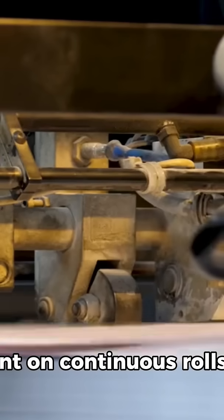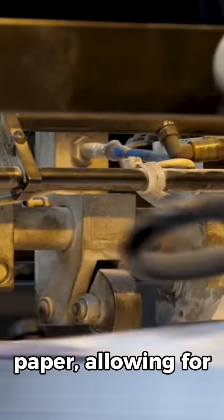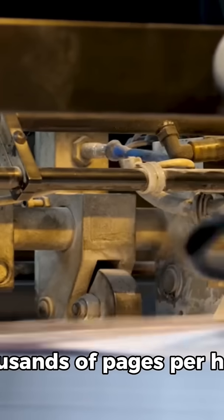Ho's Rotary Press could print on continuous rolls of paper, allowing for thousands of pages per hour.